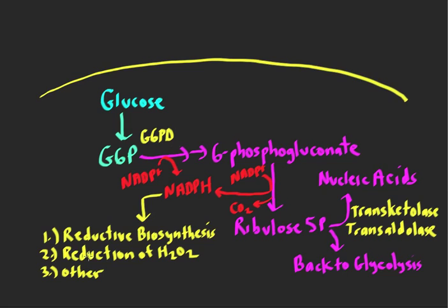Also very important clinically is the reduction of hydrogen peroxide. NADPH is needed to reduce glutathione — there's a glutathione reductase enzyme that requires NADPH to keep glutathione in the reduced state, so it can take care of hydrogen peroxide and prevent oxidative damage via glutathione peroxidase. When you have mutations in glucose 6-phosphate dehydrogenase, the red blood cell is especially vulnerable because it uses NADPH primarily to handle oxidative damage. When red blood cells are deficient in G6PD, they're very vulnerable to oxidative damage, especially with certain drugs or foods like fava beans, resulting in drug-induced hemolytic anemia.